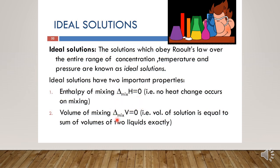Second, ΔV_mixing = 0. This means the total volume after mixing is exactly equal to the sum of the volumes of the two components. For example, if we take 10 ml of component A and mix it with 10 ml of component B, the volume of the solution after mixing will be exactly 20 ml — neither less nor more.